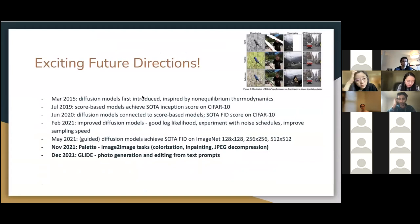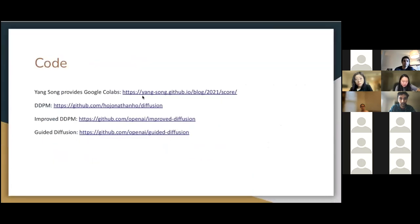And then future directions. So I kind of went over some of the history of these papers. But at the end of last year, we can see that diffusion models are being used for new image-to-image tasks like photo editing and generation from text prompts or these image-to-image tasks. And I think there's a lot of new work also to improve diffusion models, such as experimenting with noise schedules, improving sampling speed, and dealing with how to evaluate them. So there's a lot to be done with changing architectures and improving diffusion models.